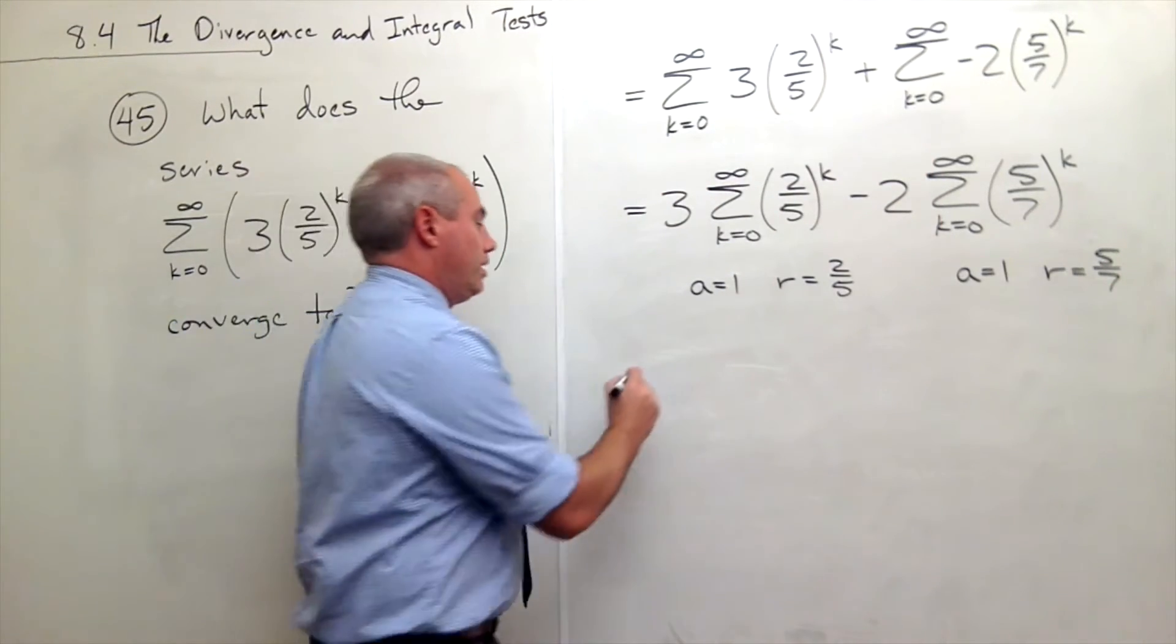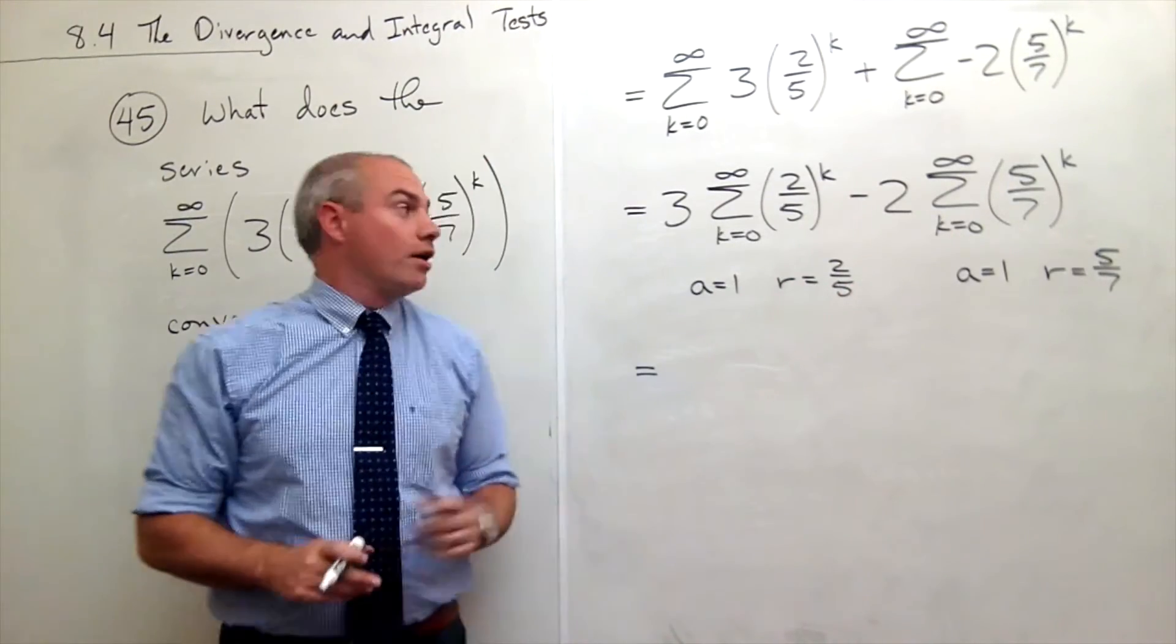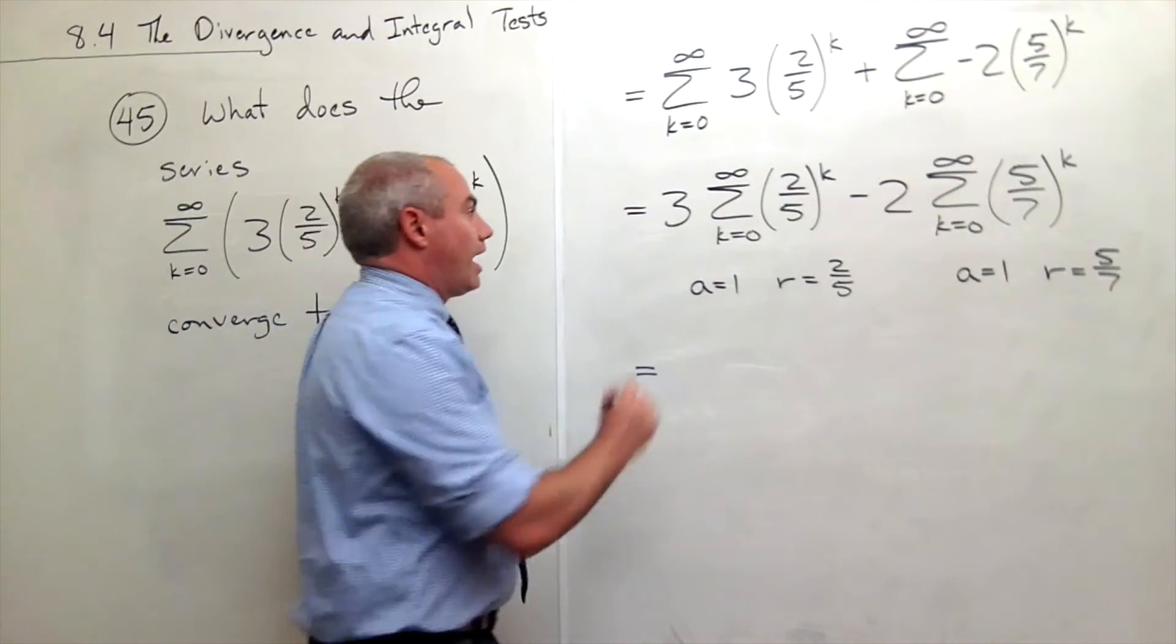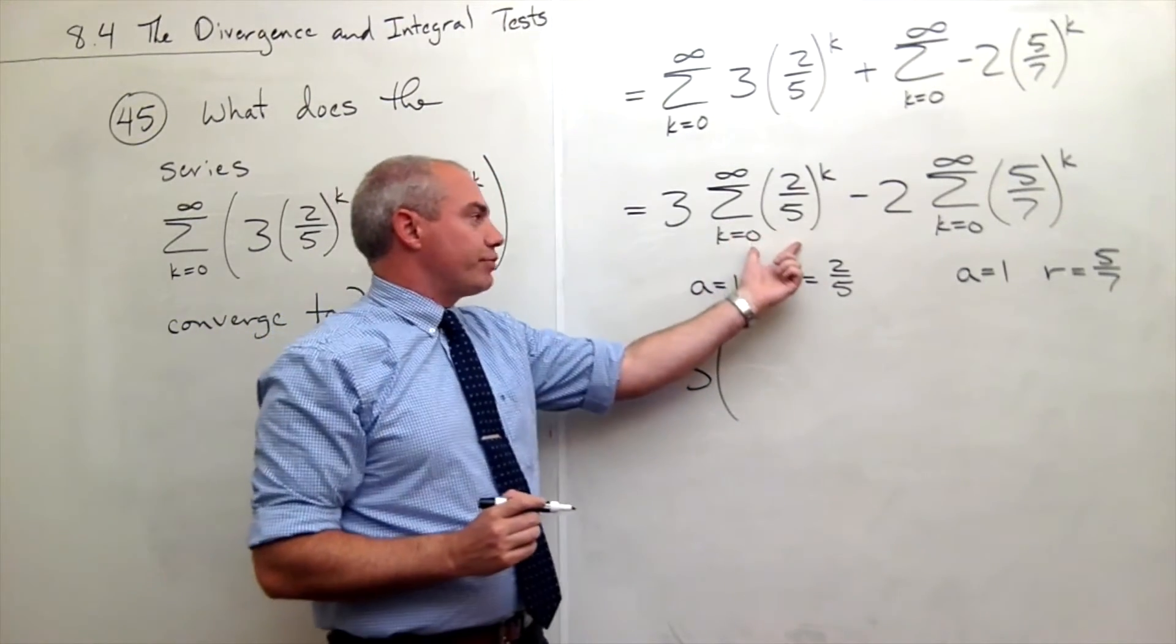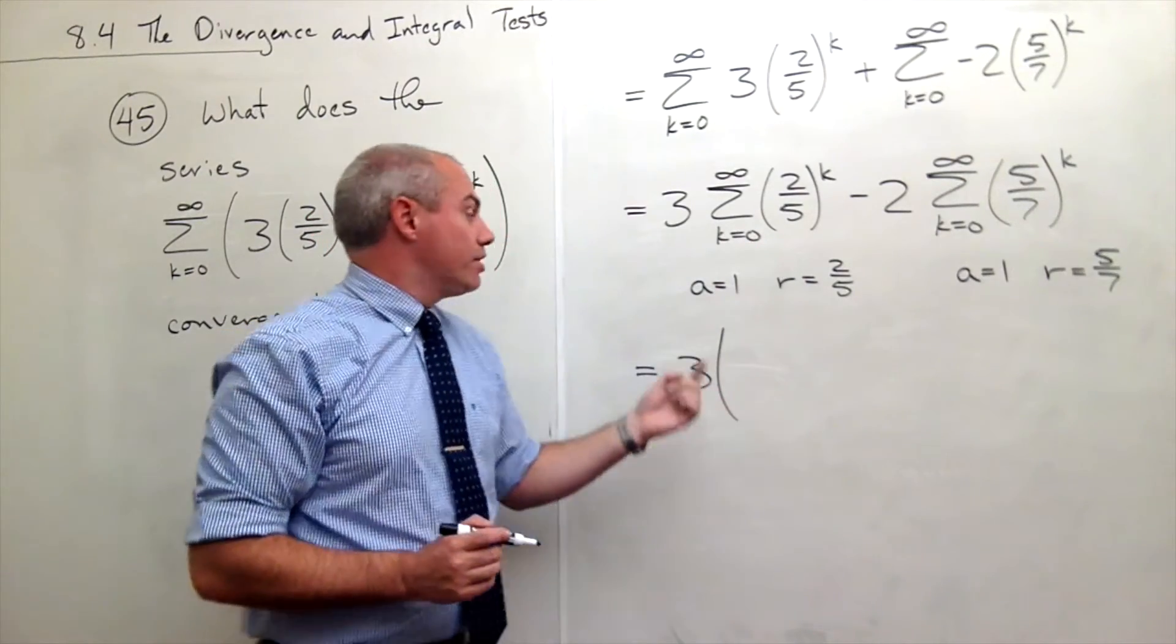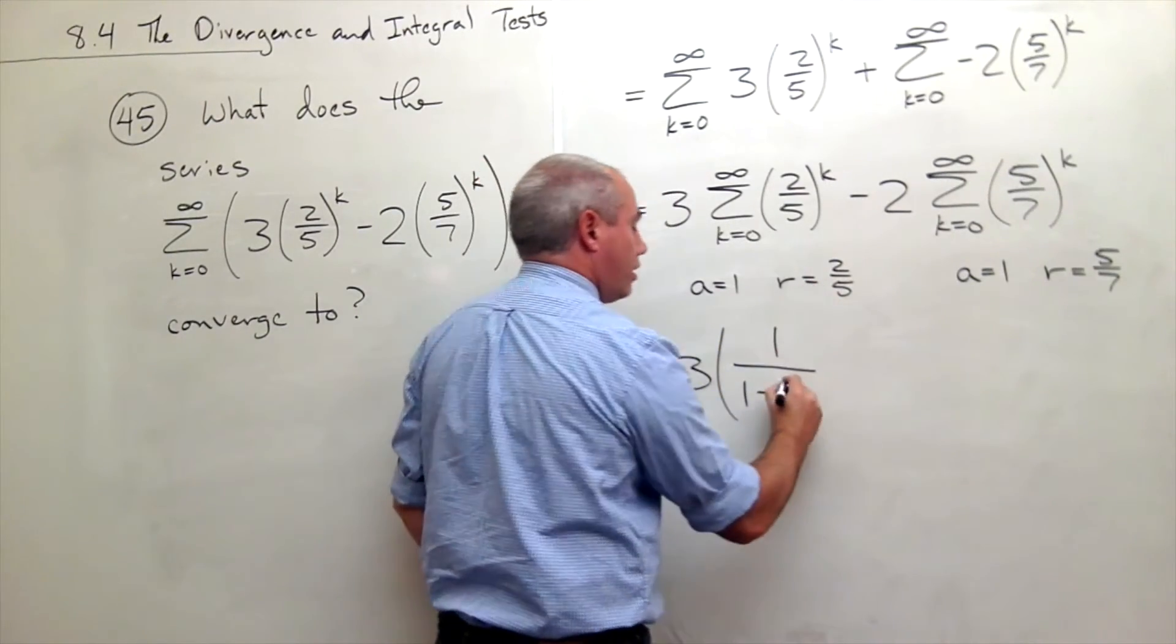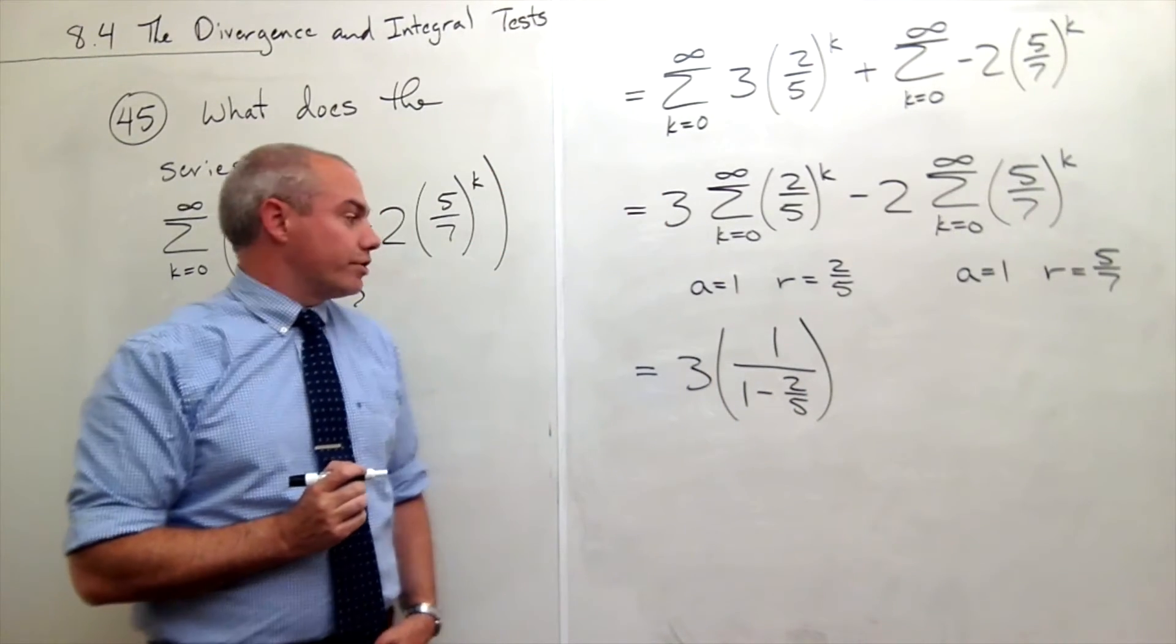So, since both of the r's absolute value are less than one, both of those sums converge, and we even know what they converge to. I get three times—remember when I have a geometric series that converges, it converges to a over one minus r. So I get a, which is one, over one minus r, which is two-fifths. So that's what that geometric series will converge to.